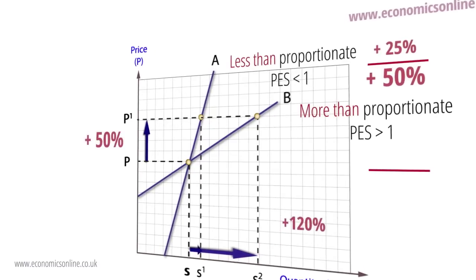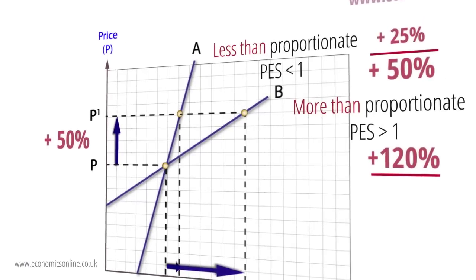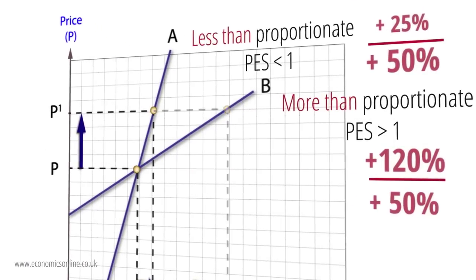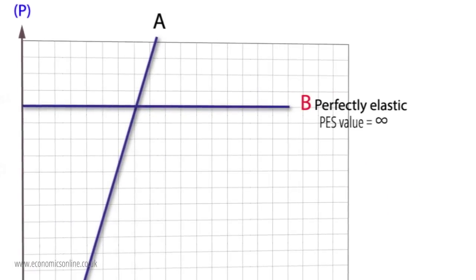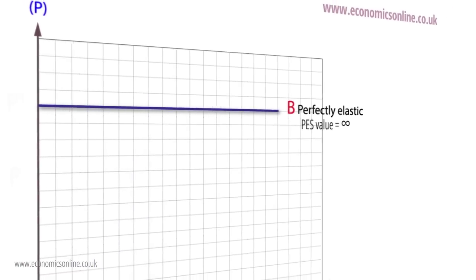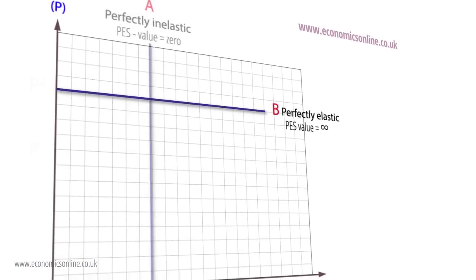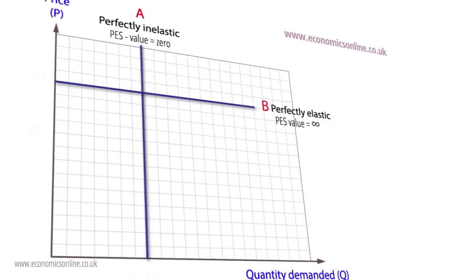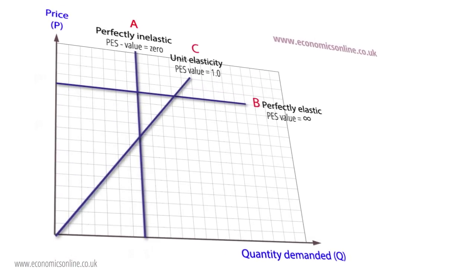The percentage increase in quantity supplied is greater than the price increase P to P1. The three extreme cases are: perfectly elastic, where the supply curve is flat; perfectly inelastic, where the supply curve is vertical; and equal to 1, shown in curve C, which is a linear supply curve coming out of the origin.